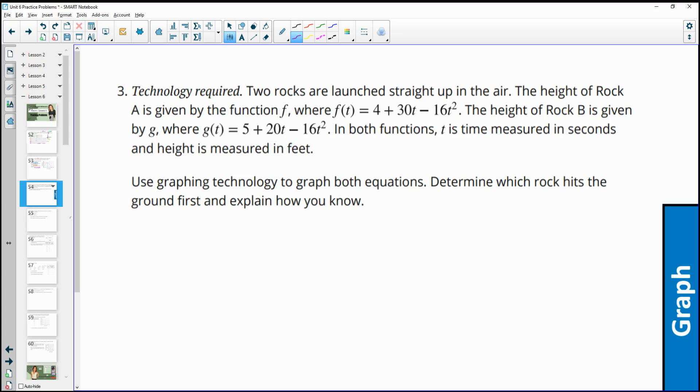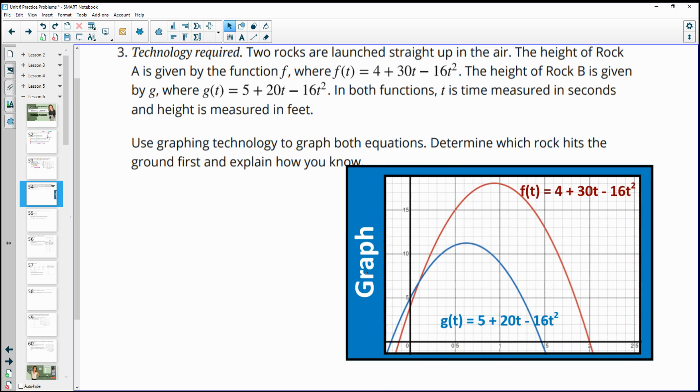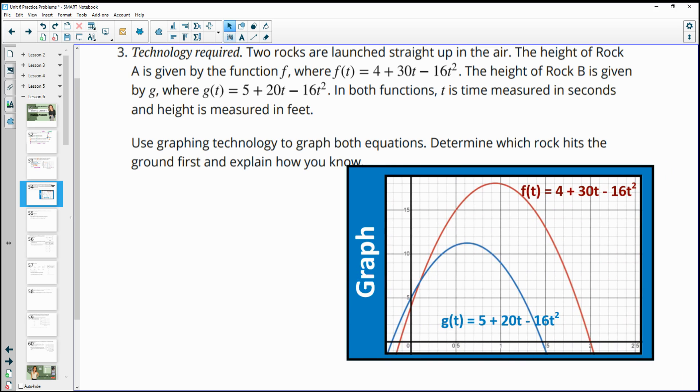Number three, two rocks are launched straight up in the air. The height of rock A is given by the function F. The height of rock B is given by the function G. In both functions, T is measured in seconds and height is measured in feet. Use graphing technology to graph both equations and determine which rock hits the ground first and explain how you know. So you can do this on Desmos or a graphing calculator or something else. So I used Desmos. And so rock A is in red. So this F function is in red. And then rock B is the G function in blue. So which one hits the ground first? And that's going to be the blue function. Okay, because it hits before one and a half seconds. And the red function hits at about two seconds.